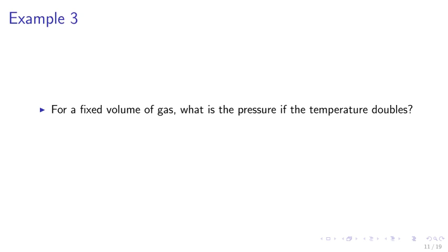Example 3. For a fixed volume of gas, what is the pressure if the temperature doubles? For a fixed volume of gas, P1 over T1 equals P2 over T2 when the volume is constant.